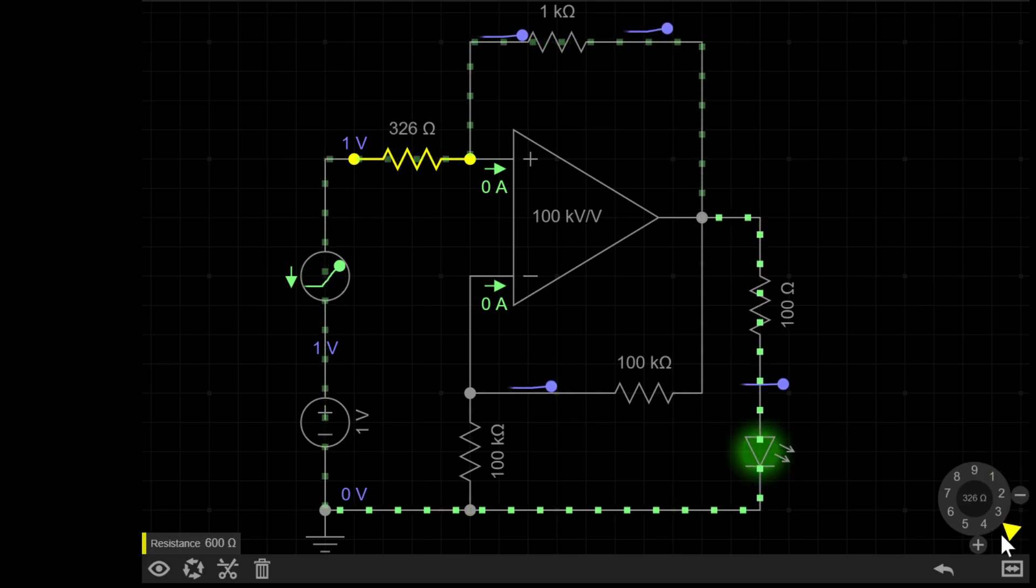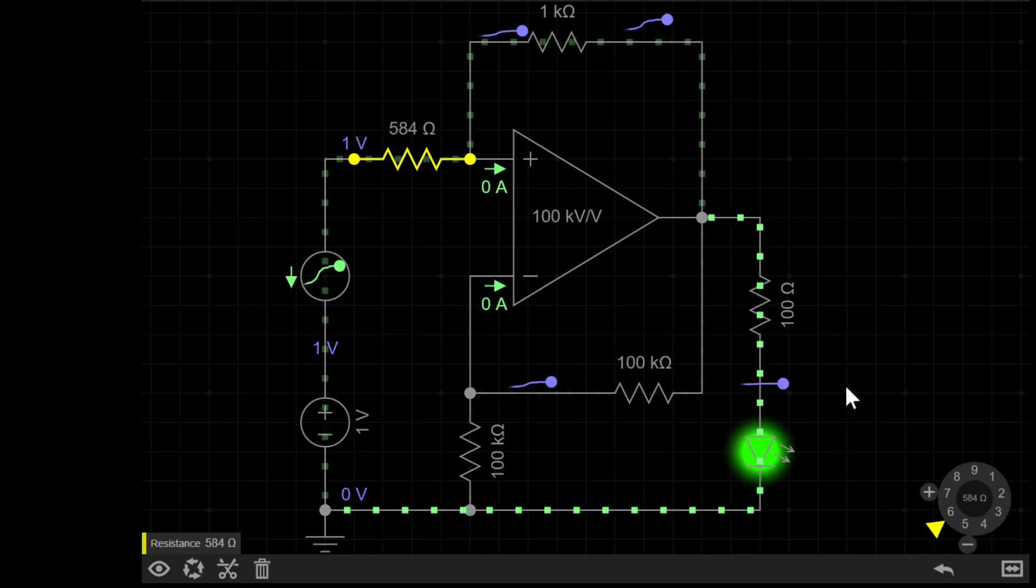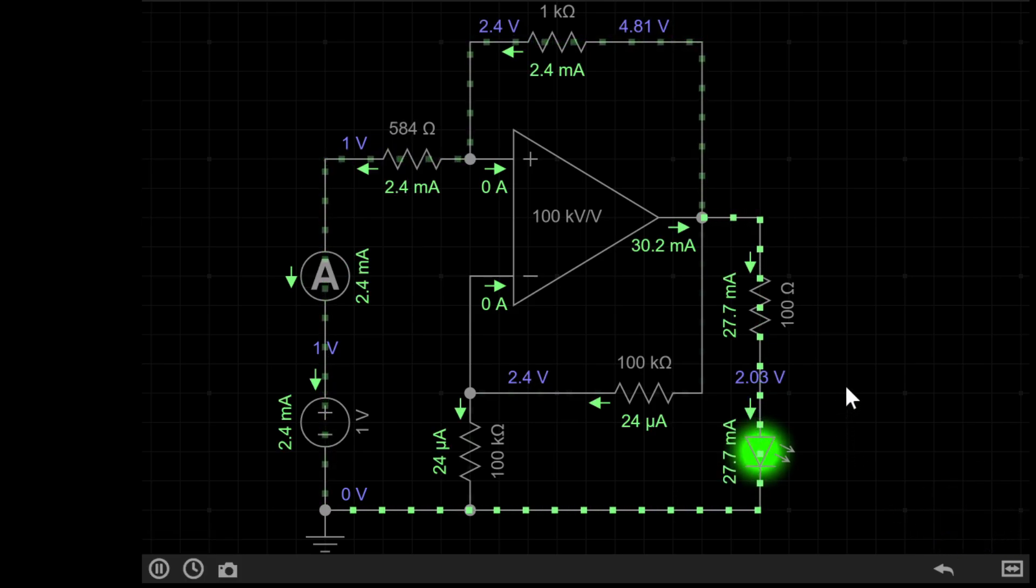If I increase it, the brightness goes up with more current. Interesting. In other words, if I increase the resistance, I also increase the current. This concept seems to break electronics, or at least Ohm's law. So let's prove it.